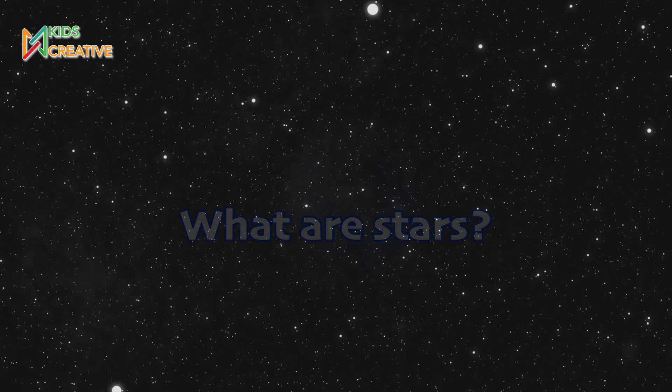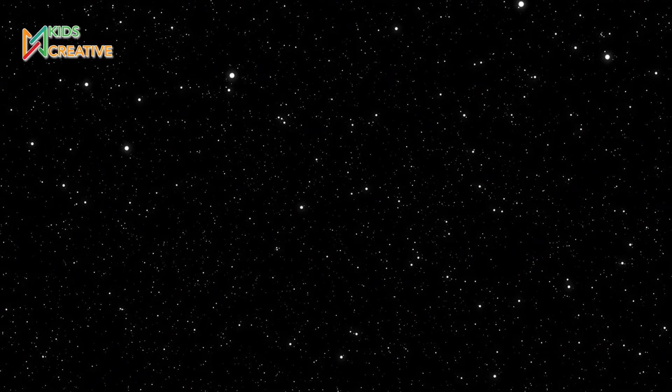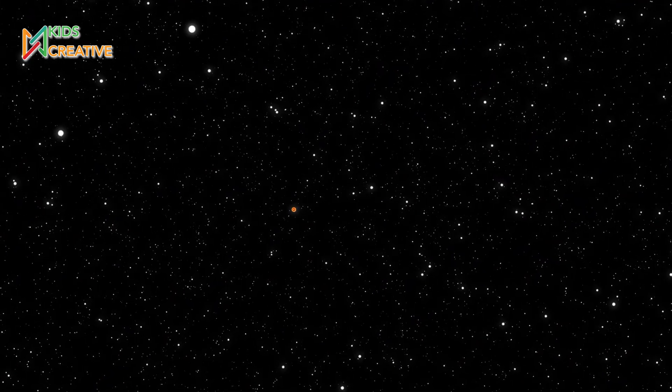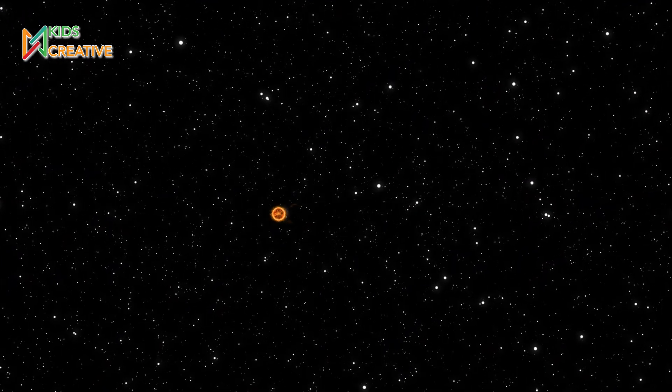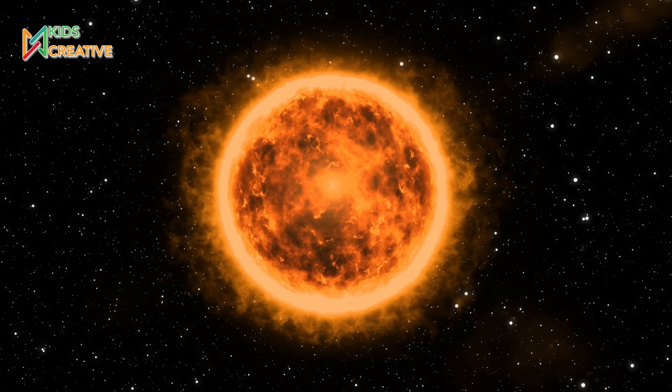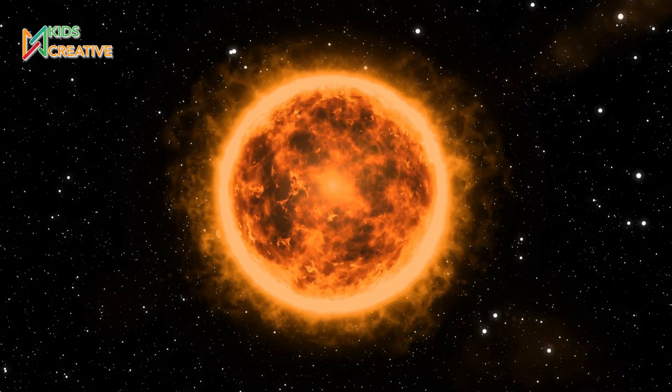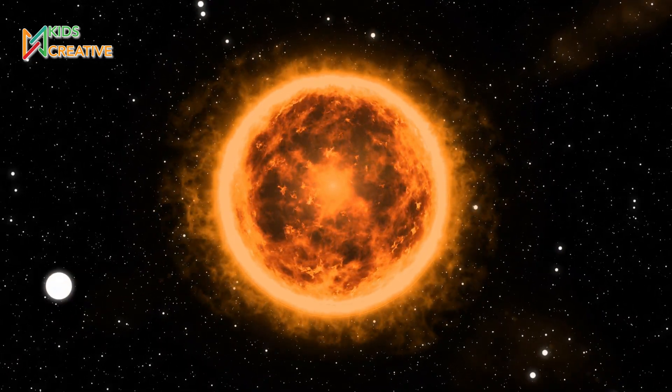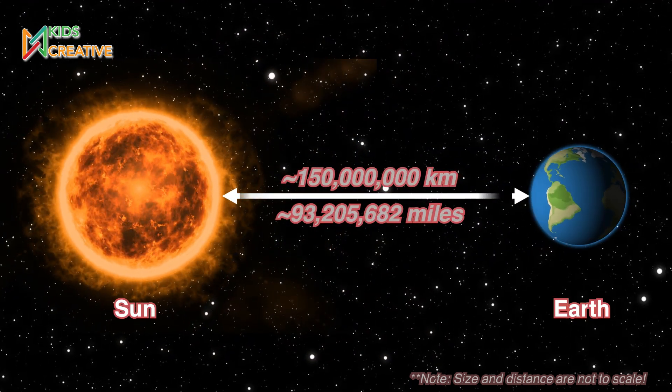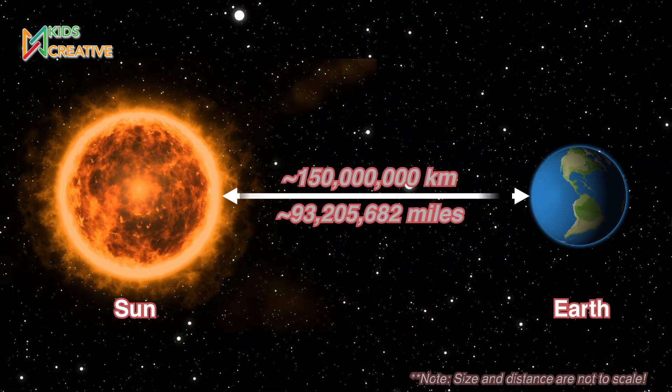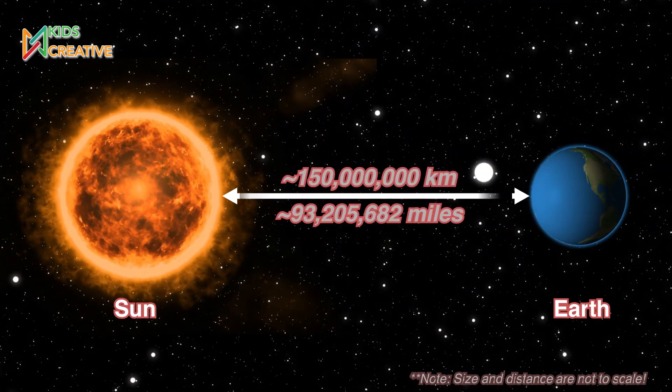Stars are giant balls of super hot gas that shine brightly in the sky. They're like big glowing light bulbs. The sun is actually a star. It's the closest star to Earth, which is why it looks so big and bright compared to the other stars in the sky.